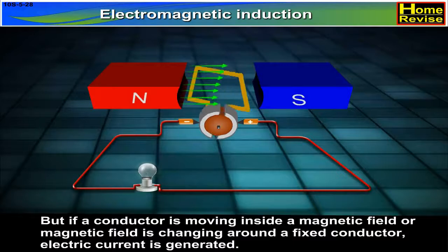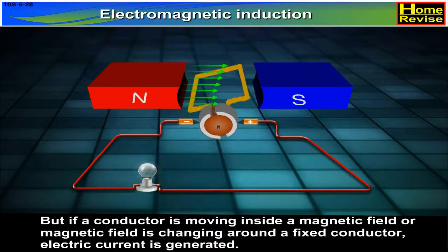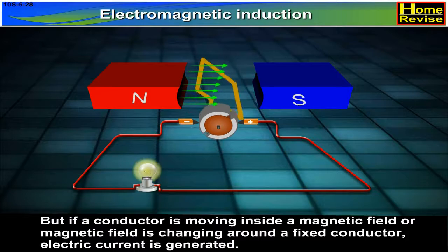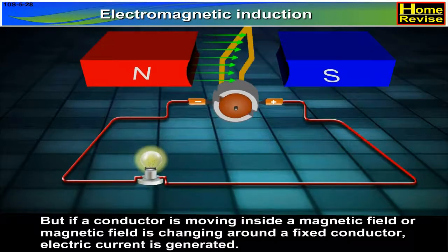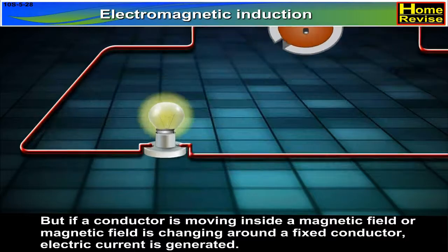But if a conductor is moving inside a magnetic field, or a magnetic field is changing around a fixed conductor, electric current is generated.